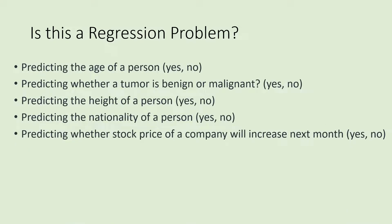Let's see if these examples are regression problems. Predicting the age of a person: yes, because age is a continuous value. Predicting whether a tumor is benign or malignant: no, this is a classification problem because benign and malignant are categories.